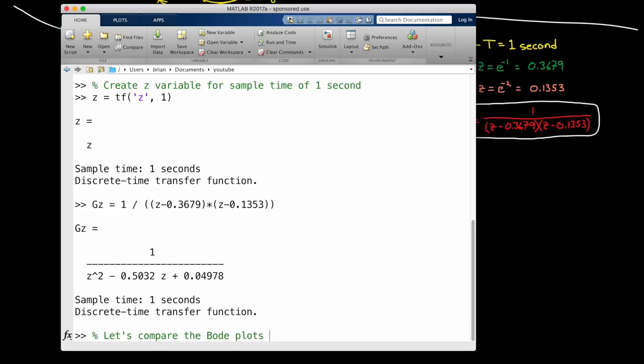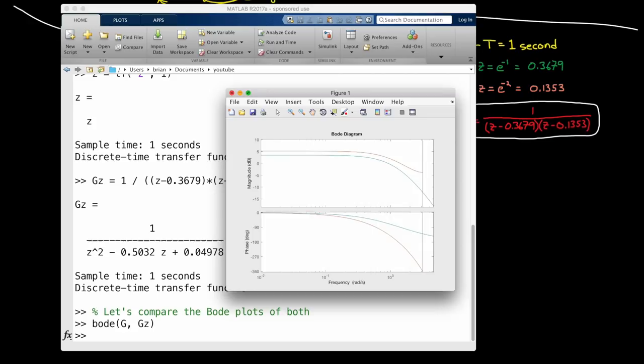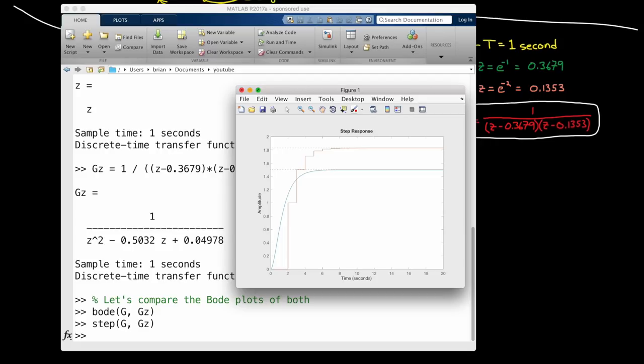The discrete system has higher overall gain, and the phase falls off much faster. The difference is even more clear by looking at the step response of both. Again, the discrete system has higher overall gain. So what are we missing? Well, we're missing the other three steps in the matched pole-zero method.